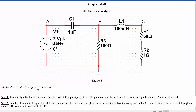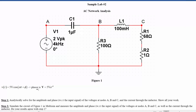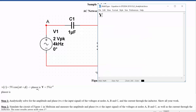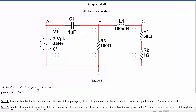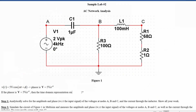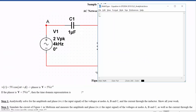And to go the opposite direction, from a phasor representation of v equals 5 volts e to the j times phi, the time domain representation — the time domain signal that this phasor is actually representing — is v(t) equal to the real part of the phasor after you multiply back in the complex time dependence.